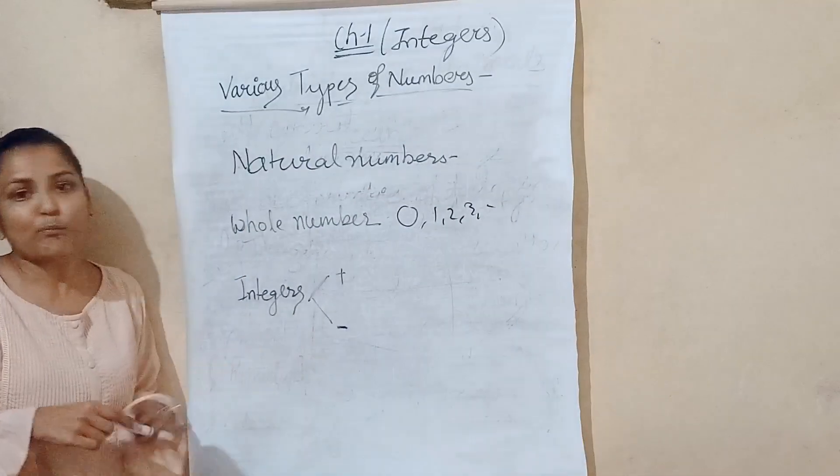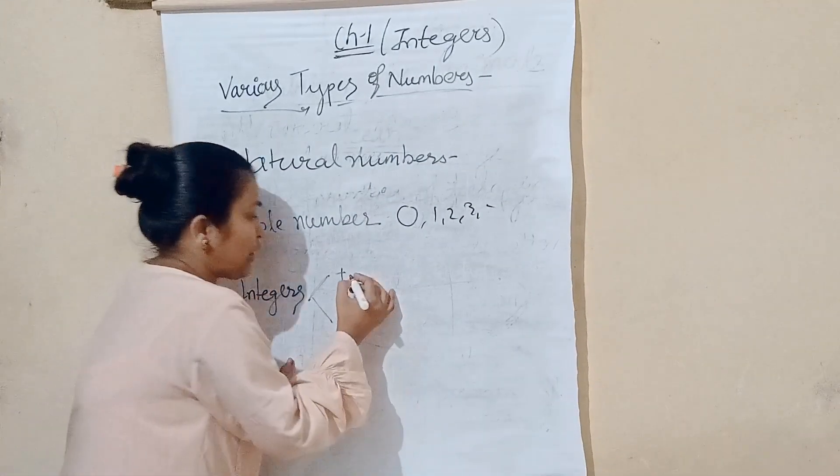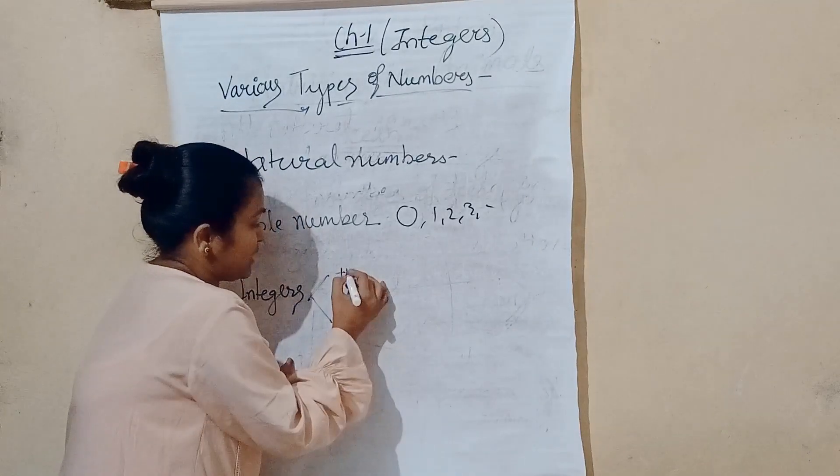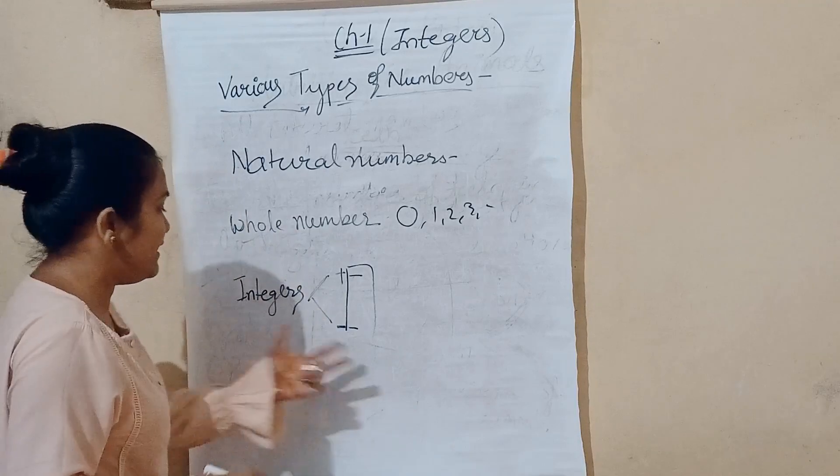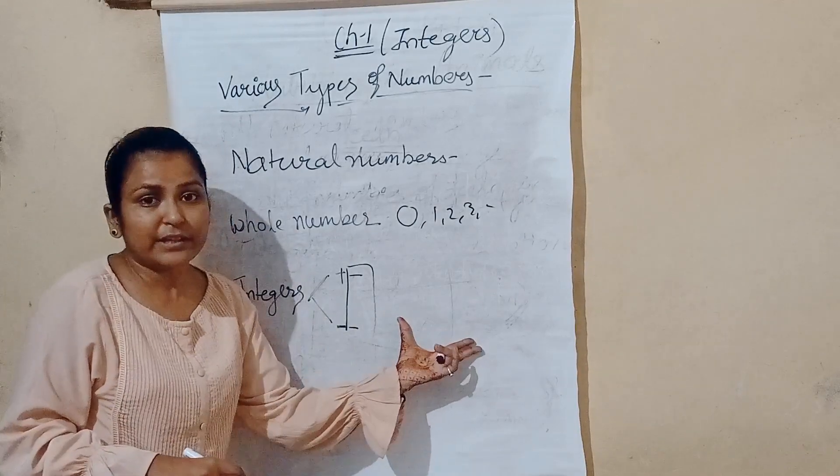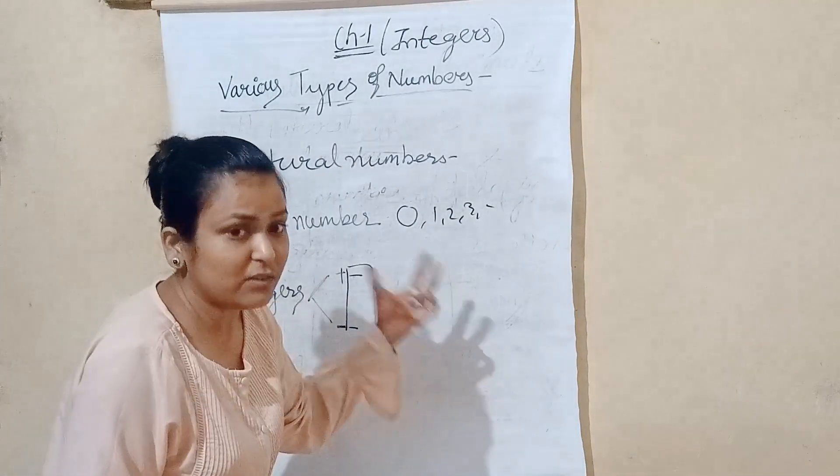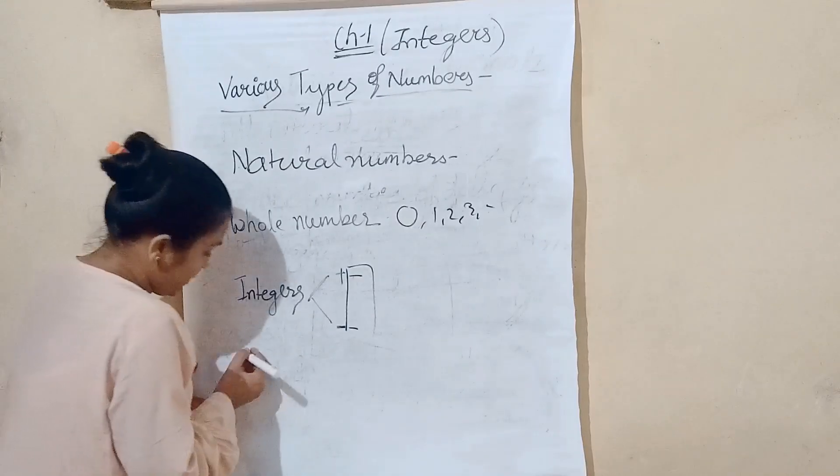The integers are called Positive and Negative. To our main topic, there are two types included in our integers.